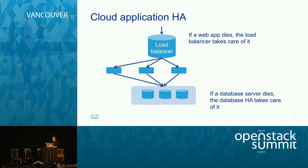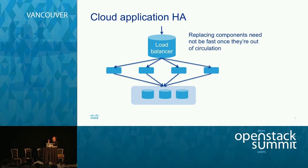If a database server dies, database HA takes care of it. There are different models, but the idea is: you lose one server out of the database cluster and you've not lost anything in terms of the application. Replacing components isn't necessarily fast — you have to take them out of circulation quickly, but you've got time to get them back in because nobody's missing them.